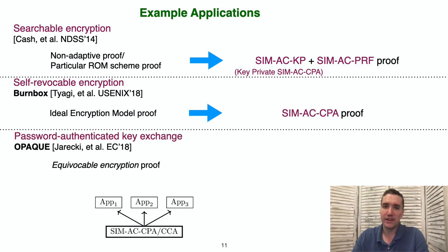Finally, the opaque password-authenticated key exchange protocol of Jarecki et al. is proven secure, assuming that an equivocable encryption scheme is used. This is a new notion of security that they introduced for symmetric encryption in the e-print version of their paper. In our work, we observe that this new notion is implied by our own SimACCPA notion. In particular, theirs is basically a single-user, one-time-use, special case of our notion.